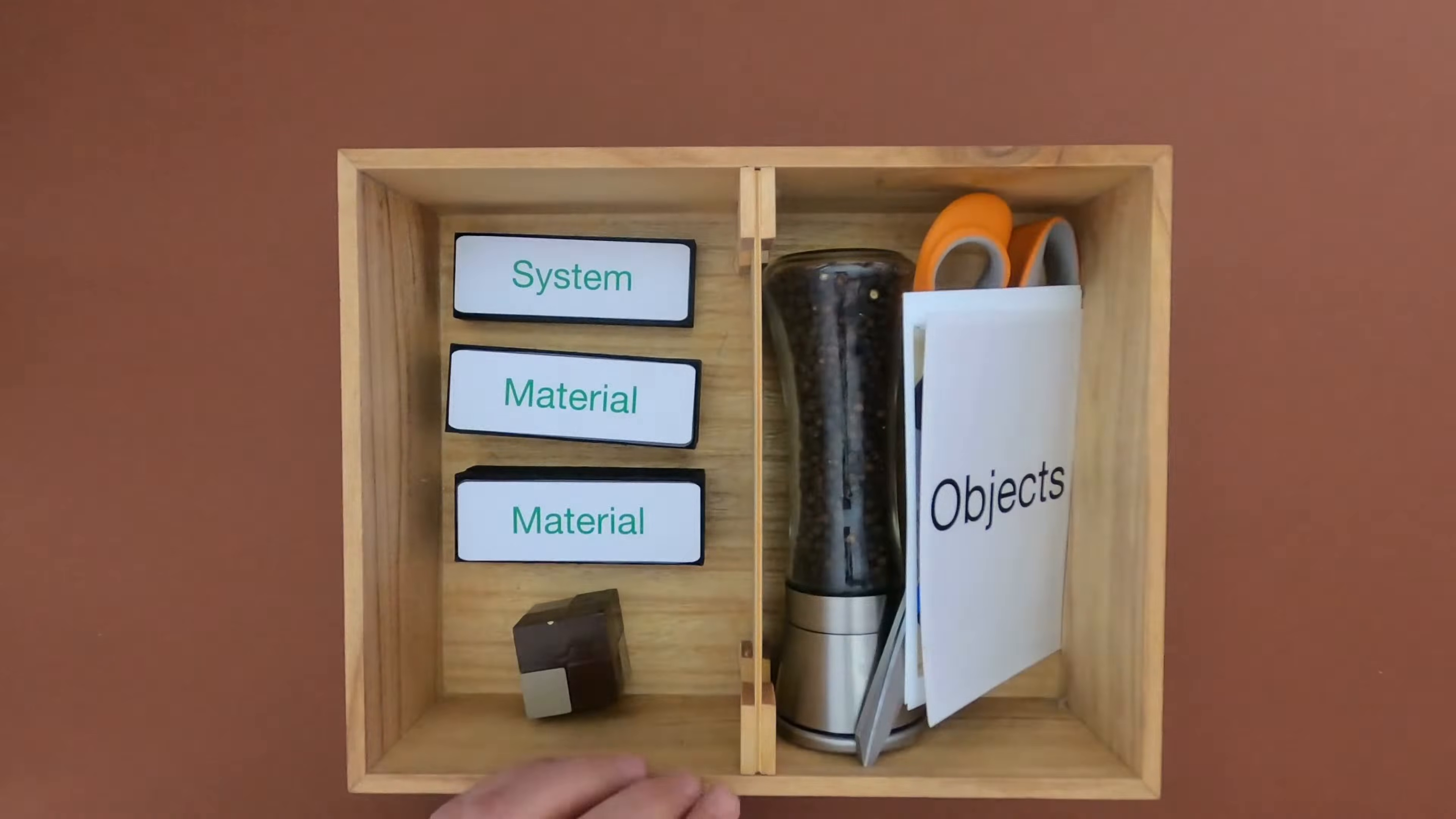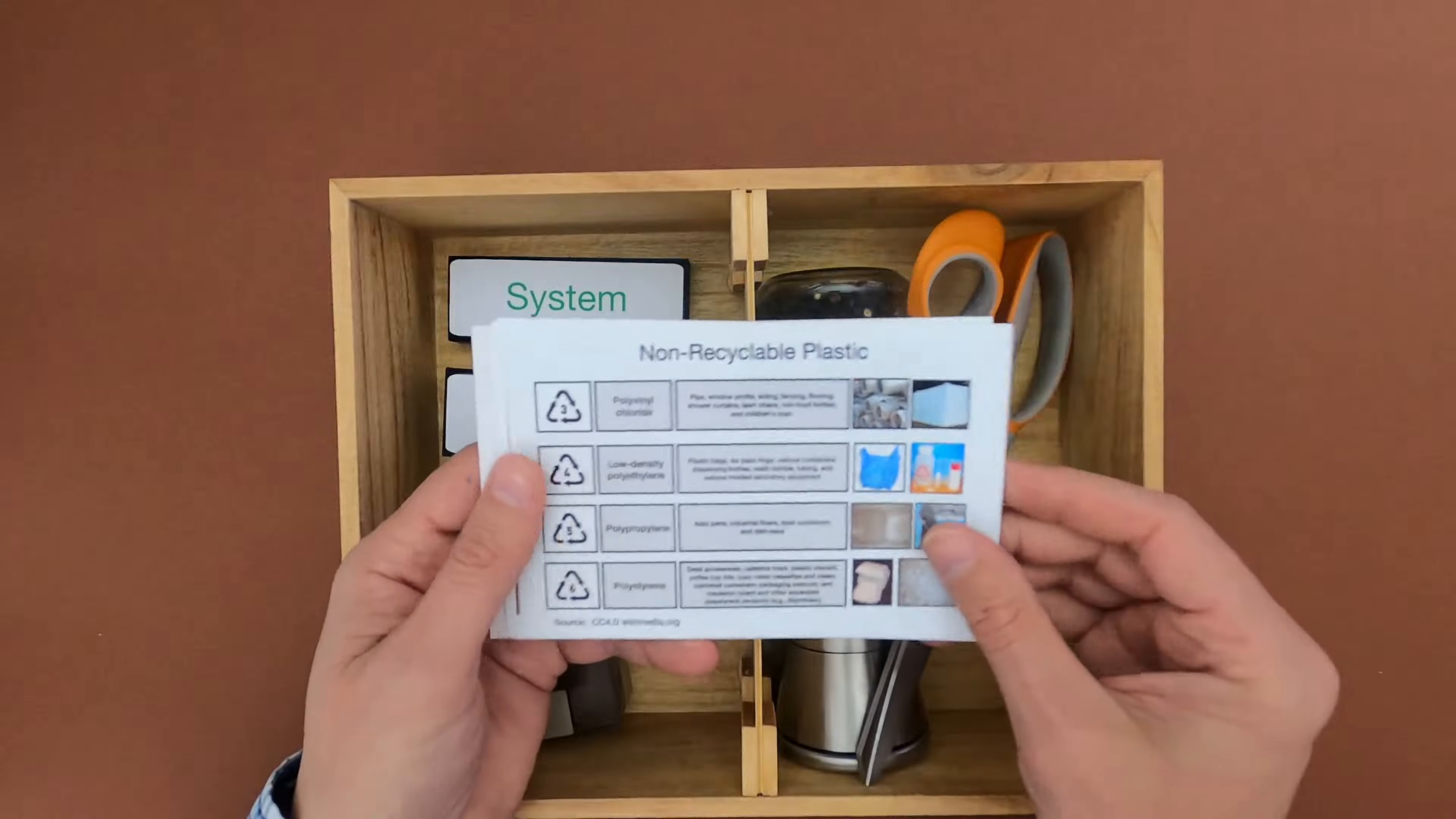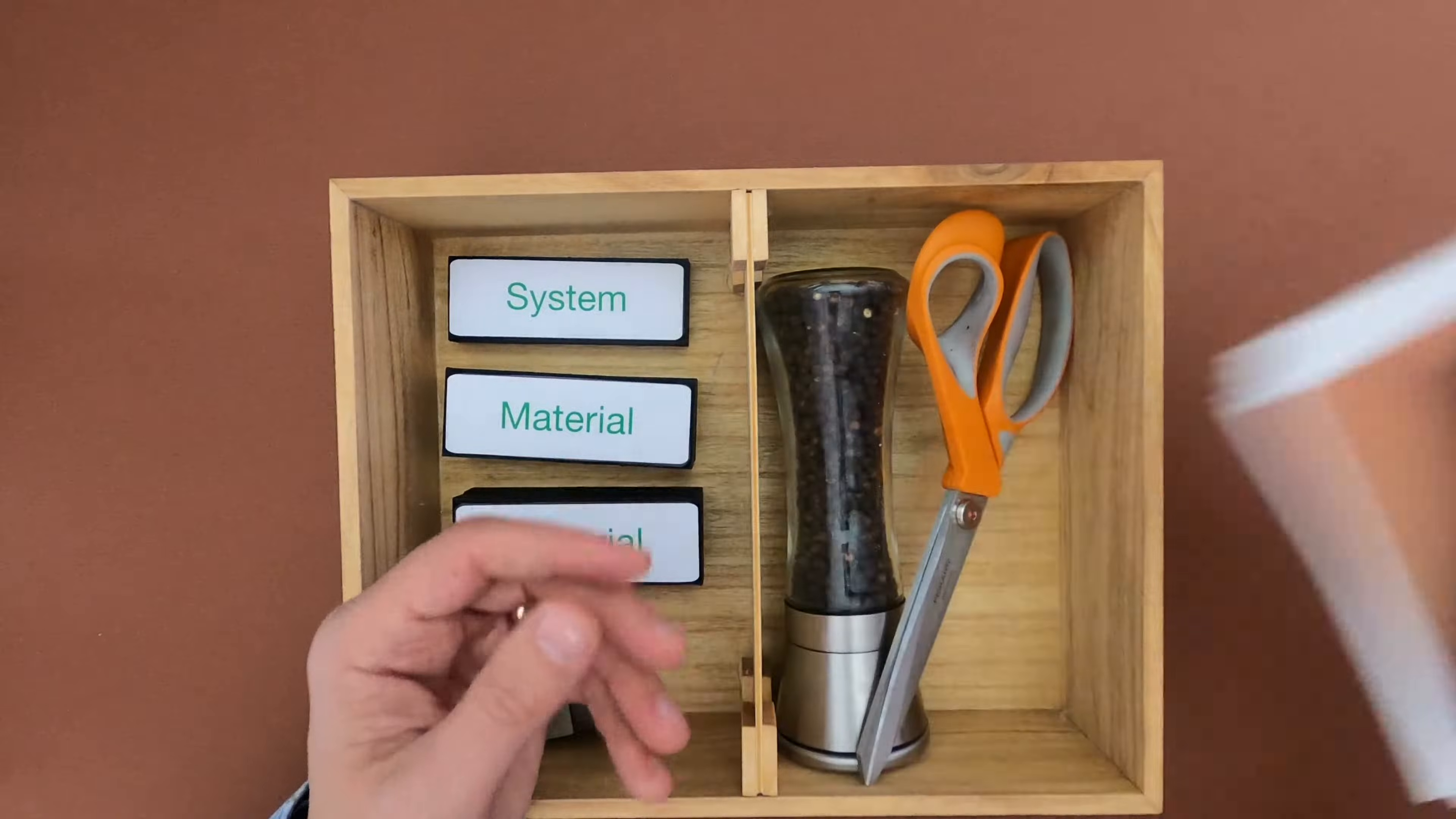After watching this video, you should be able to identify material and the importance of material properties in objects like this soft-sided cooler or in non-recyclable plastic. I'm going to show you my thinking around material properties in this nice pair of scissors and then you'll have a chance to think with me as we think through this pepper grinder.